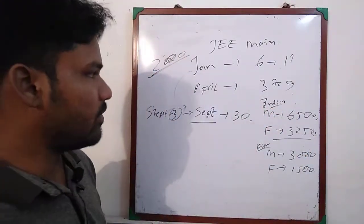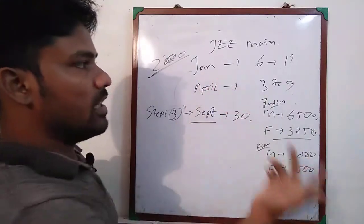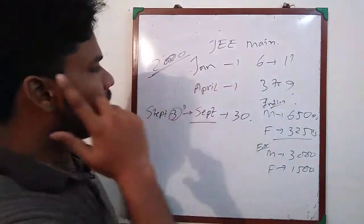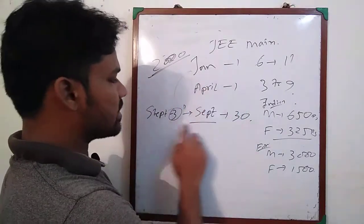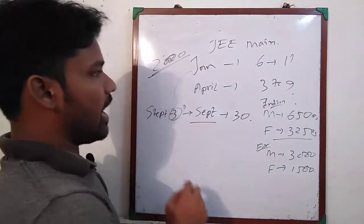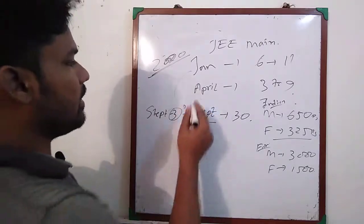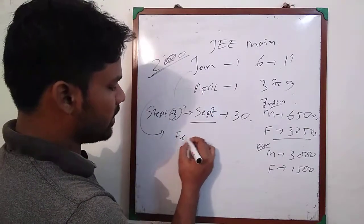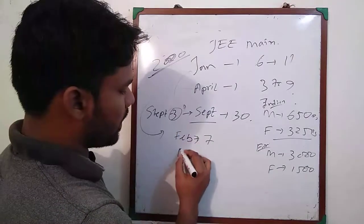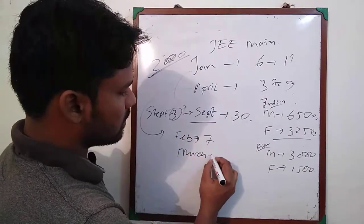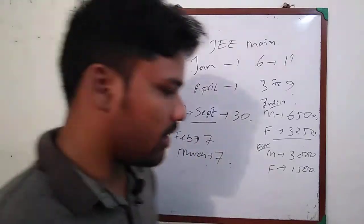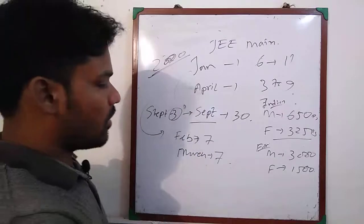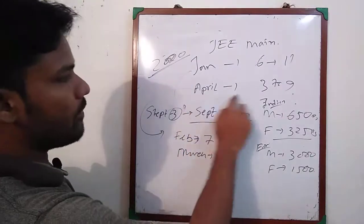You can attempt both attempts or just one. The January exam is conducted from 6th to 11th. For the April exam, registration will start from February 7th to March 7th. That's a one month duration.